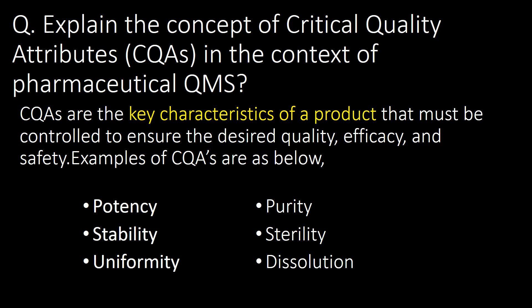Explain the concept of critical quality attributes, i.e., CQAs, in the context of pharmaceutical QMS. CQAs are the key characteristics of a product that must be controlled to ensure the desired quality, efficacy and safety. Examples of CQAs include potency, stability, uniformity, purity, sterility and dissolution.